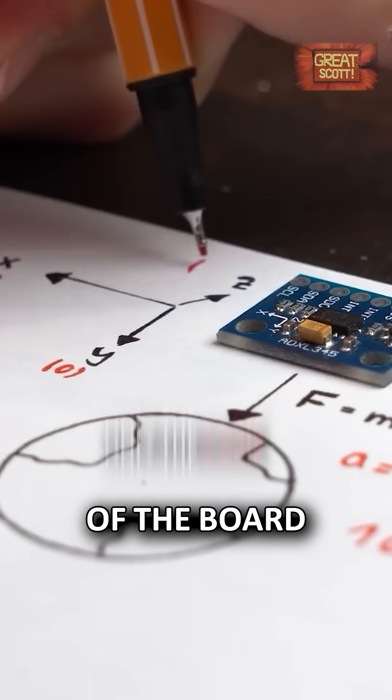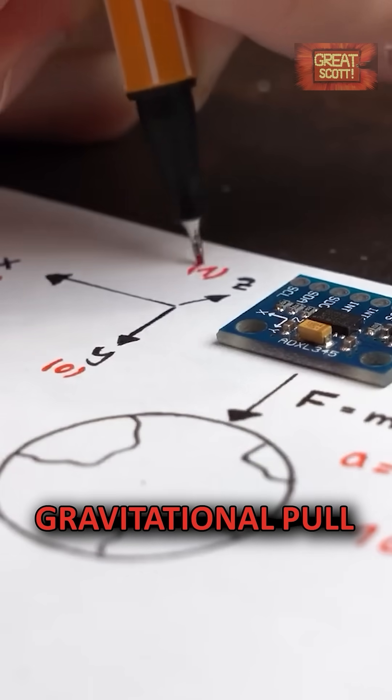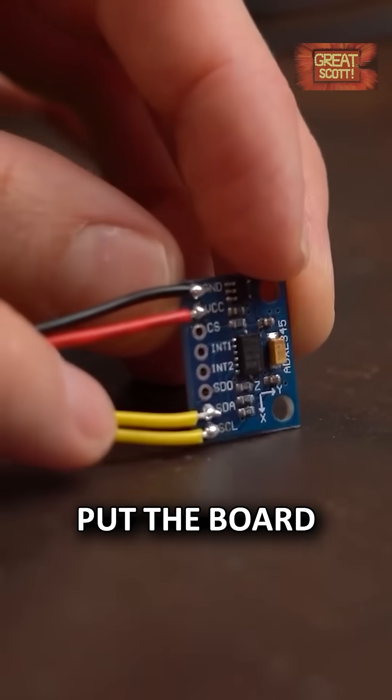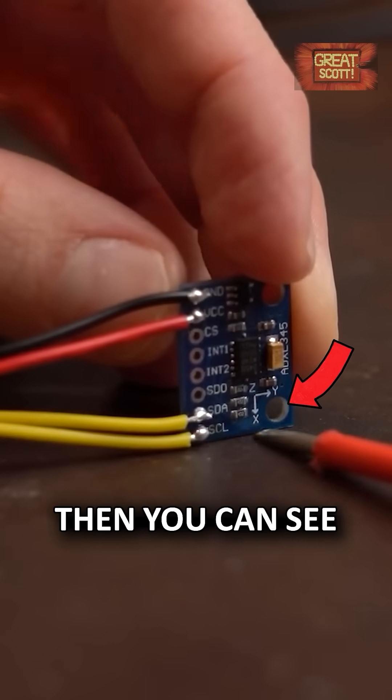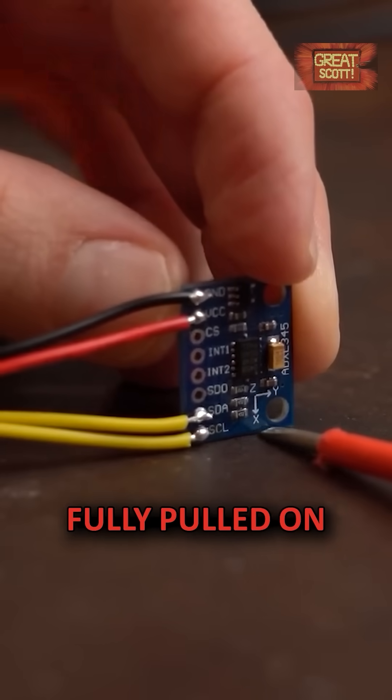In this position of the board, only the Z axis notices the gravitational pull. But if we put the board on its side, then you can see that now the X axis should be fully pulled on.